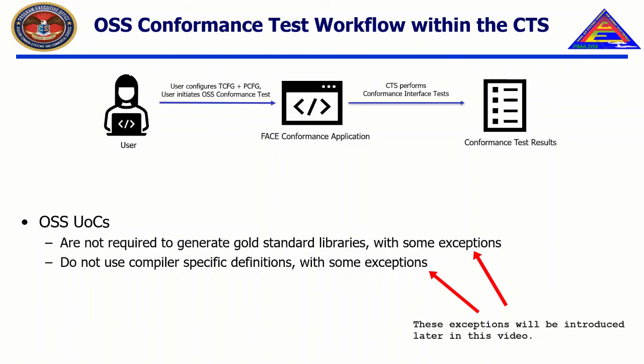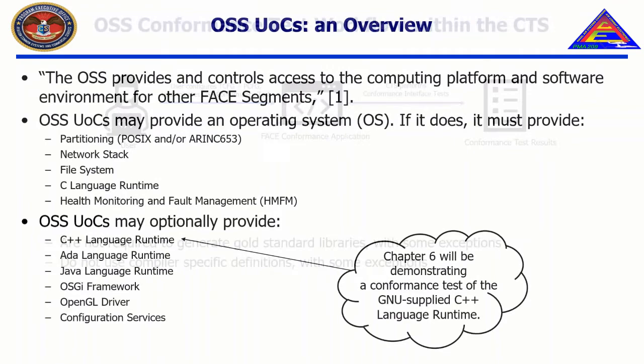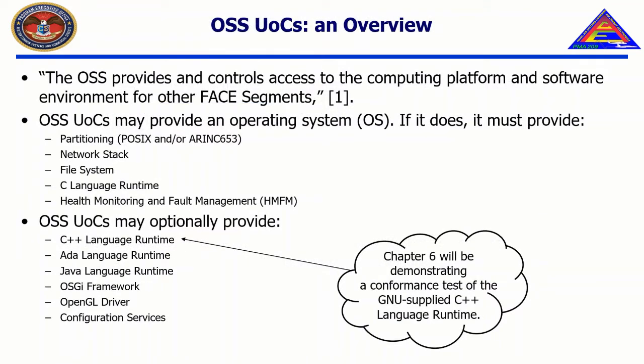Finally, the conformance test report is generated. The OSS may provide an operating system. If the OSS provides an operating system, it must provide, at a minimum: partitioning, POSIX and/or RNN 653, a network stack, a file system, the C language runtime, and health monitoring and fault management, or HMFM.